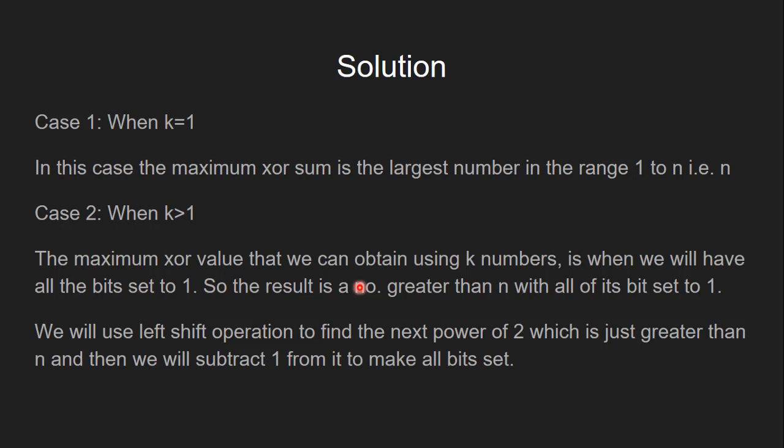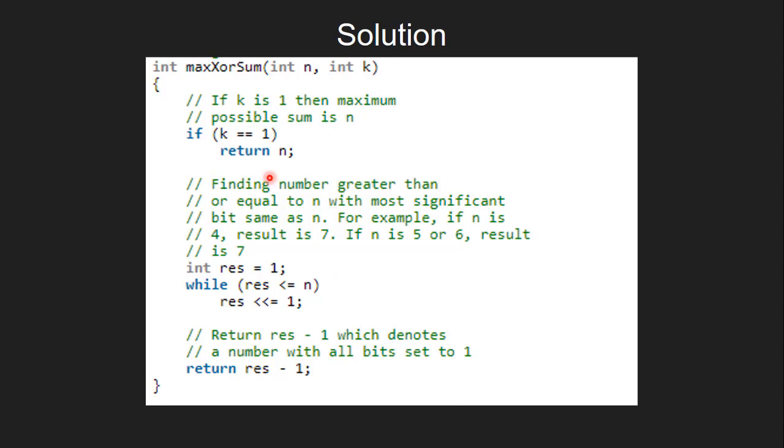Let's see the code for that. Here we have defined a function maxXORSum, and it takes two parameters: integer n and the value of k. Now first we check if k equals 1. If that is true, then we simply return the value of n, indicating the maximum XOR possible is the number n itself.